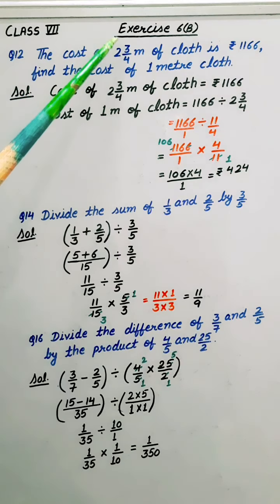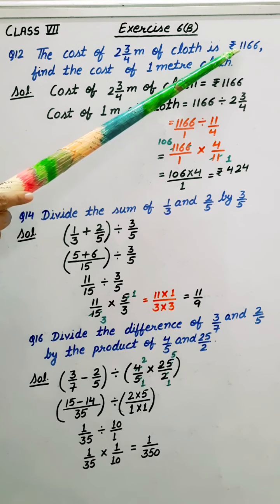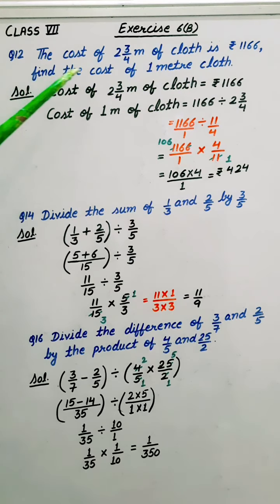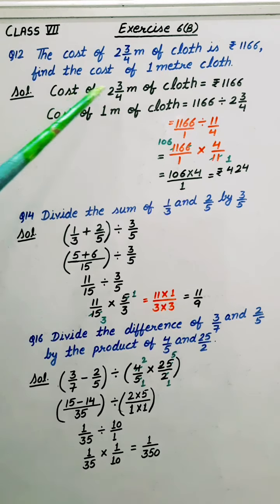The cost of 2 whole 3 by 4 meter of cloth is rupees 1166. Find the cost of 1 meter cloth. So let's begin the solution.